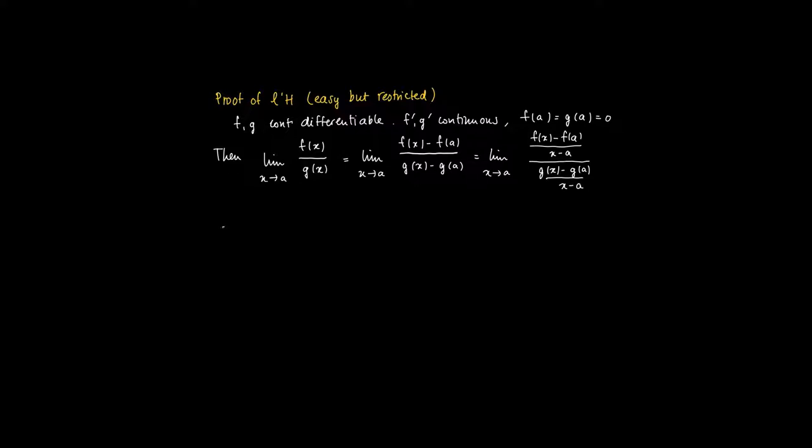And if the limits of numerator and denominator exist, then we may write this as the limit of x to a of fx minus f of a divided by x minus a, divided by the limit of x going to a of g of x minus g of a divided by x minus a.